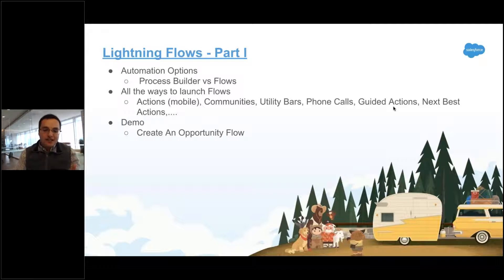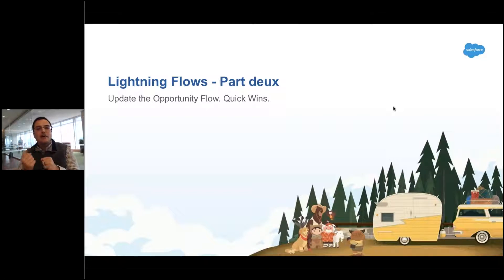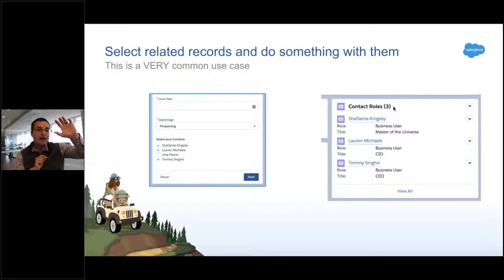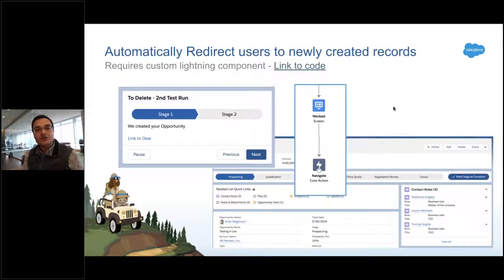Last time we covered how flows differ from Process Builder, the ways you can launch them, and we created a simple flow that creates an opportunity. This time we're taking it up a notch with some quick wins. I'll walk through a generic use case most of you will want: selecting related records and doing something with them — like picking specific contacts on an account or products on an opportunity. I'll also show you how to automatically redirect users to a newly created record.